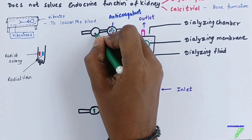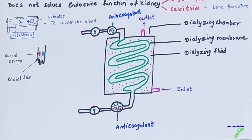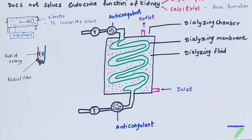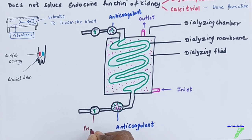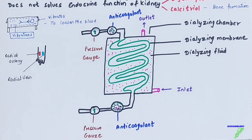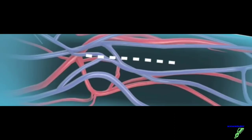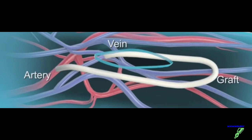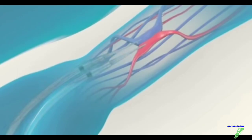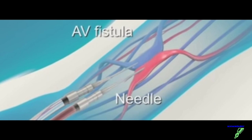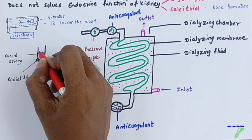There is also a pressure gauge — a device that measures and maintains the pressure of the blood, because the blood pressure must remain constant; any increase or decrease causes serious problems. Before starting dialysis, the doctor makes a cut between the artery and vein, inserts a graft, and joins them to form an AV fistula. The needle is inserted and blood is sucked out.